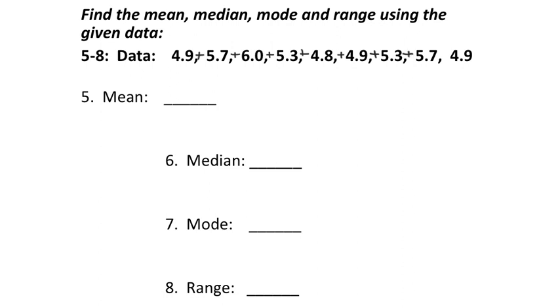You're welcome to do this in your head if you'd like. It's a little bit early for me, so I'm going to use the calculator. You have to be careful because sometimes I either type in the wrong number or miss a number. 4.9 plus 5.7 plus 6.0 plus 5.3 plus 4.8 plus 4.9 plus 5.3 plus 5.7 plus 4.9 gives me the sum of 47.5.